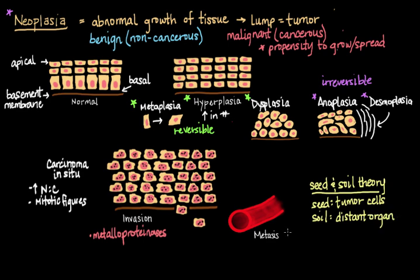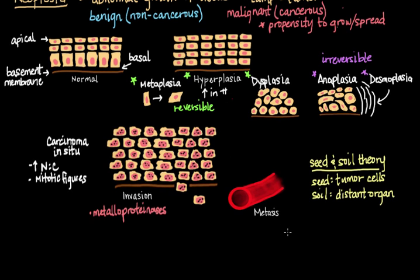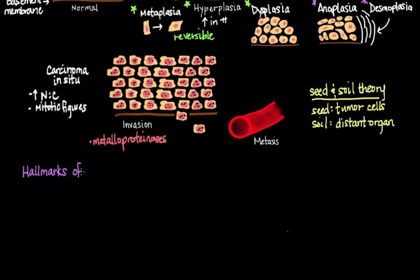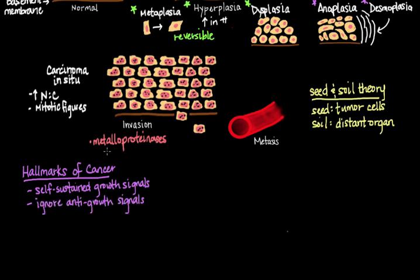There are a few common characteristics that certain neoplastic cells possess that predispose them to being more malignant. We call this group of common characteristics the hallmarks of cancer. The first of these characteristics is the ability to create self-sustained growth signals, and going along with that, cells need to attain the ability to ignore anti-growth signals. Neoplastic cells also need the ability to evade the immune system. The immune system is a built-in cancer-detecting system that can detect abnormal cells and either destroy them or cause them to undergo apoptosis. So neoplastic cells that are cancerous have found a way to hide from the immune system and avoid apoptosis.